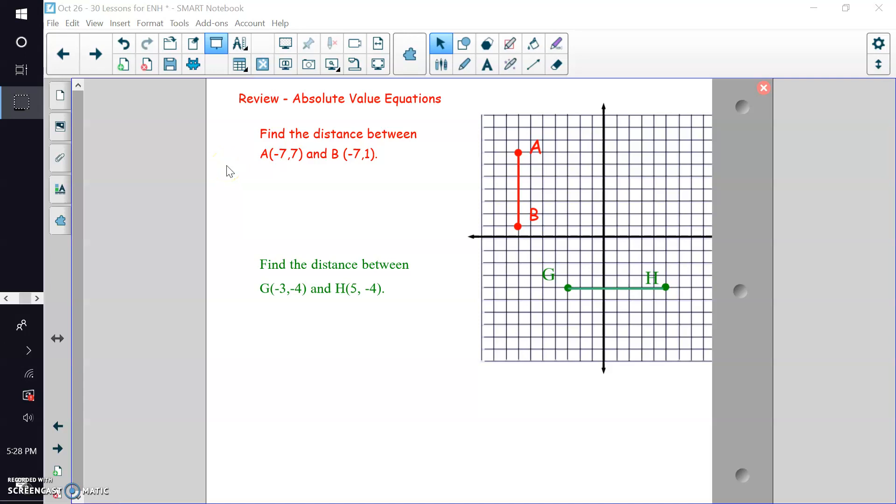Hi, this is Mr. Boughton, and I wanted to go over how to write an absolute value equation to find the distance between two points that are on a coordinate plane. My previous video just looked at a number line, so now I just wanted to show you what it looks like on a coordinate plane.